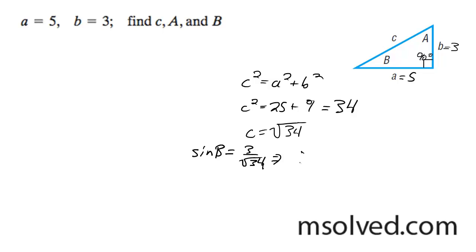And then B is going to be equal to... And now we're going to get inverse sine. So B is going to be equal to 31 degrees.